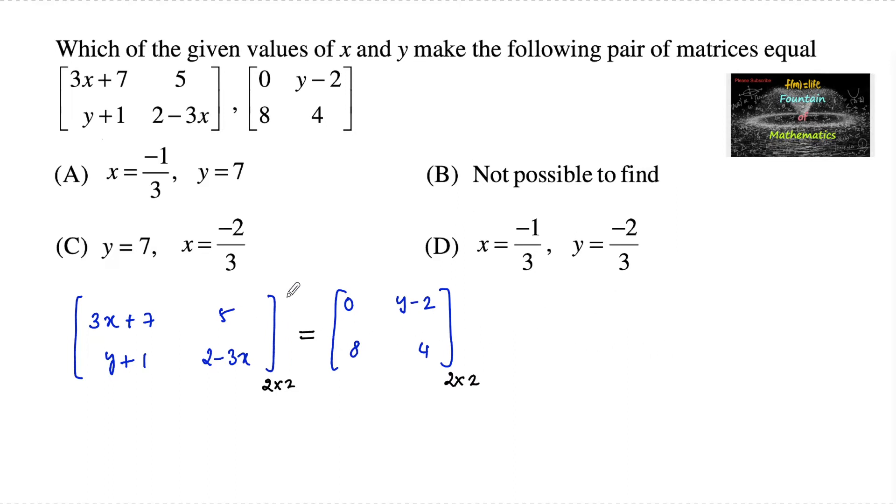To make these two matrices equal, their corresponding elements must be equal. So 3x plus 7 must equal 0, which implies x is equal to minus 7 upon 3.